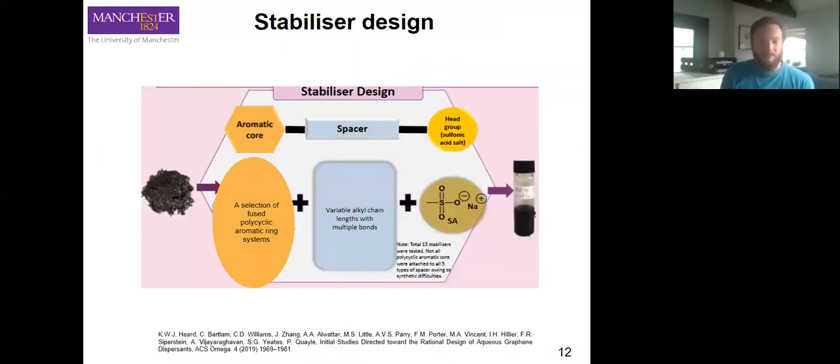Stabilizer design: our liquid phase exfoliation pot starts with some flaked graphite, and our stabilizers have a selection of fused polycyclic aromatic ring systems. This is our graphene anchor, effectively. This will interact with our graphene sheets because it has a large localized electron cloud.